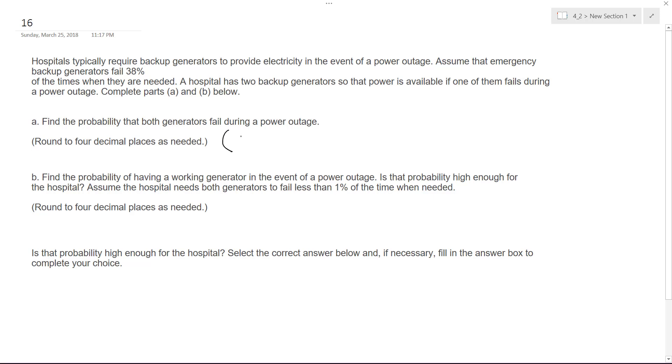In this instance, if we have two, all we do is 38 times 38%, so it's going to be 0.38 squared, or just 0.38 times 0.38, and what we end up with is 0.1444, or roughly 14.44 percent.